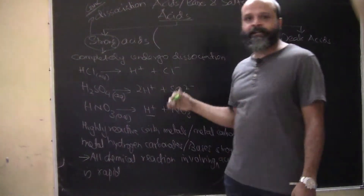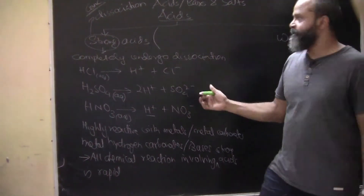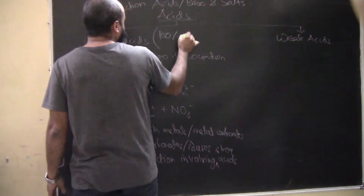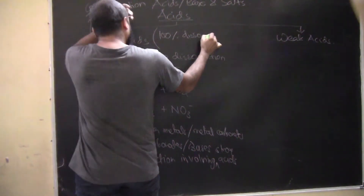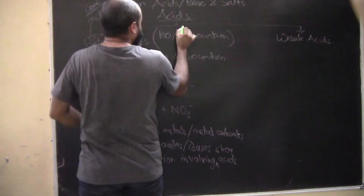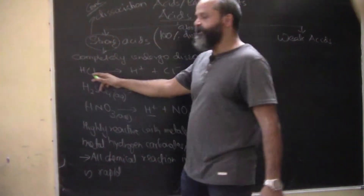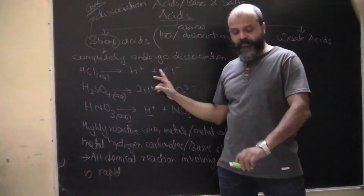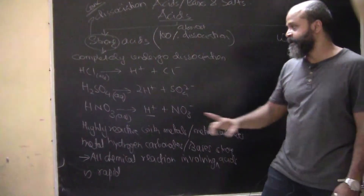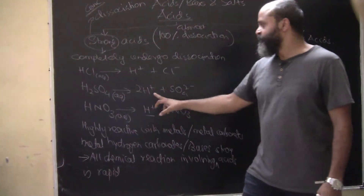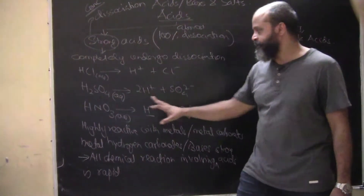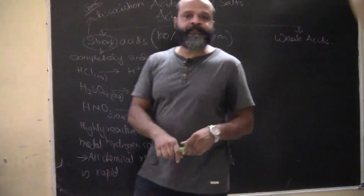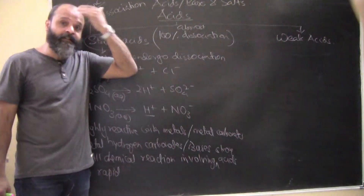In strong acids, there is almost 100% dissociation. The entire HCl present in aqueous solution undergoes dissociation into H⁺ and Cl⁻. The H₂SO₄ that is there will also undergo complete dissociation. So strong acids basically means 100% dissociation.